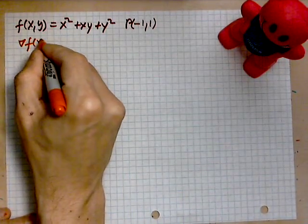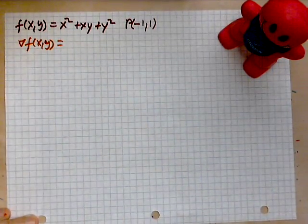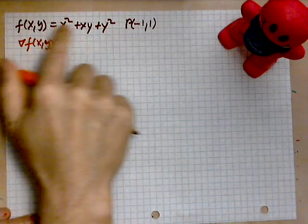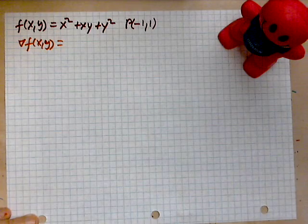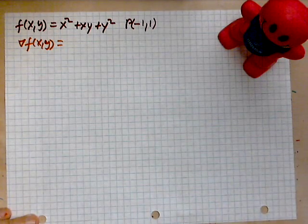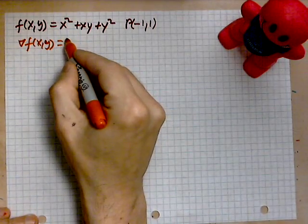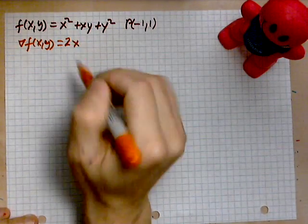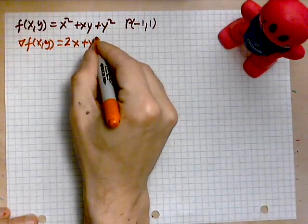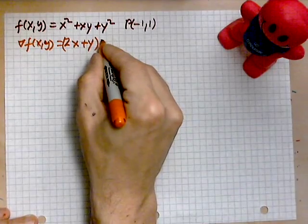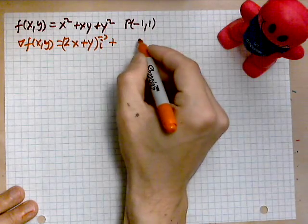The gradient as a function of x and y — remember this is a vector in the xy-plane — will be formed by differentiating with respect to x. When you vary x, it's like holding y constant like a number, so the derivative gives us 2x + y, and this becomes the i-component of the gradient.